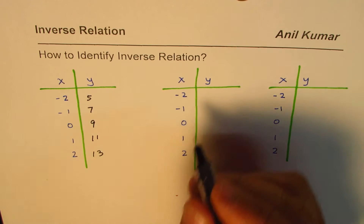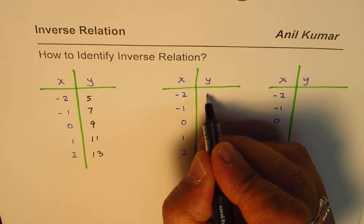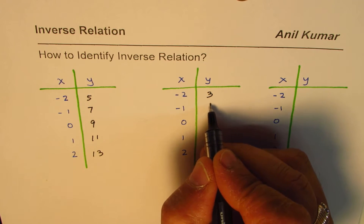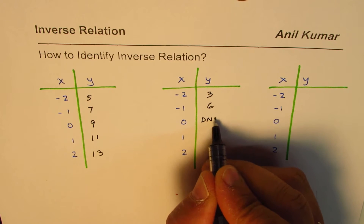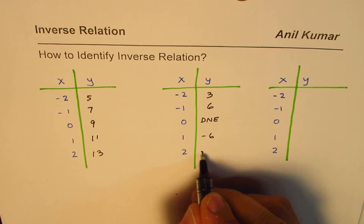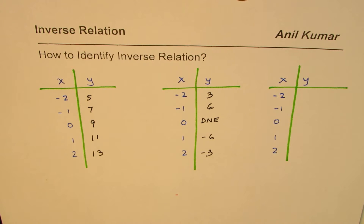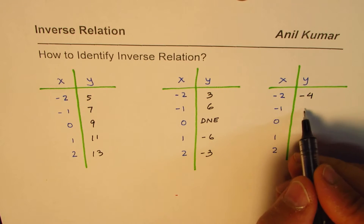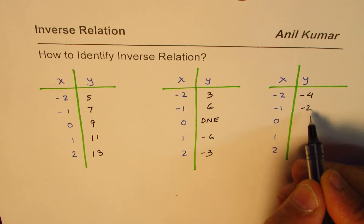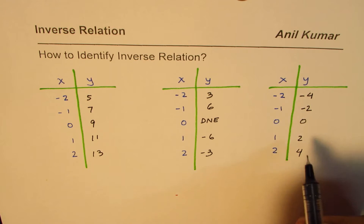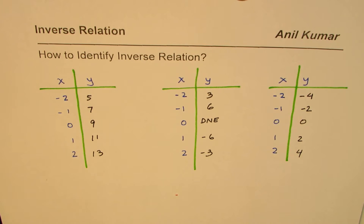Here in this second case, let me write down numbers like 3, 6, and then 'does not exist' — no number will go there. Then minus 6 and minus 3. Will that represent an inverse relation? Or consider a third set: minus 4, minus 2, 0, 2, and 4. These are our three different relations.